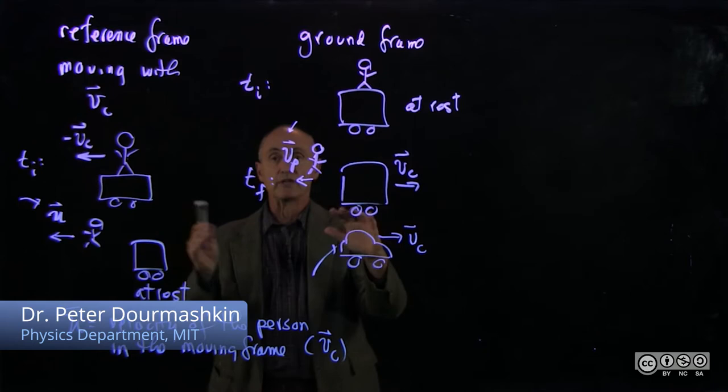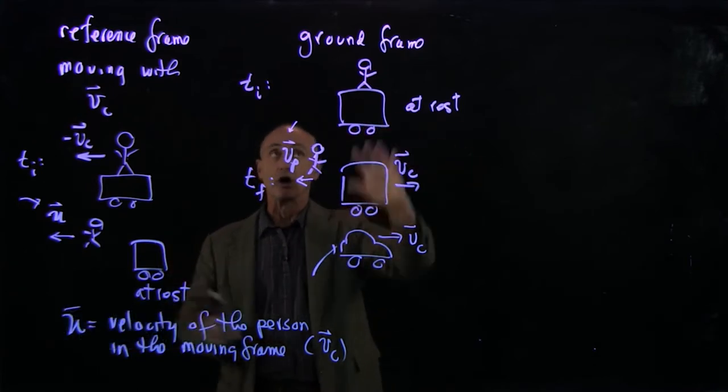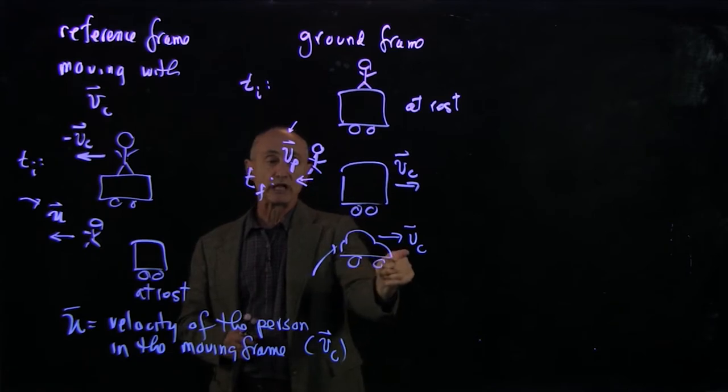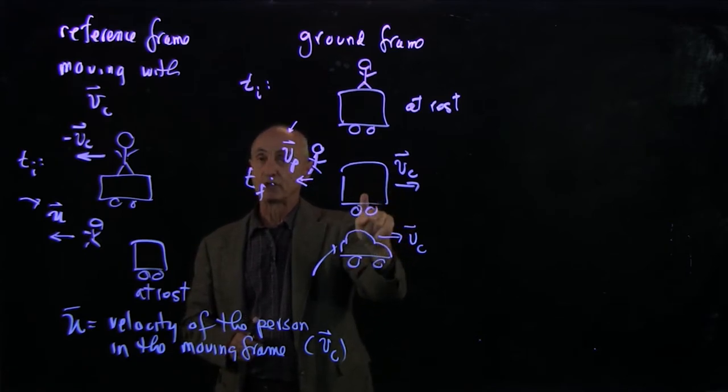So we've now drawn pictures of the interaction of a person jumping off a cart in both the ground frame and a reference frame moving with velocity vc, which is the final speed of the cart.